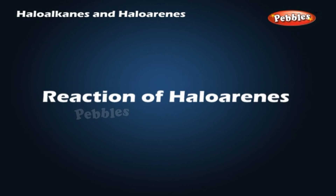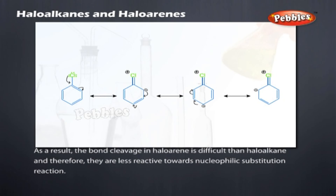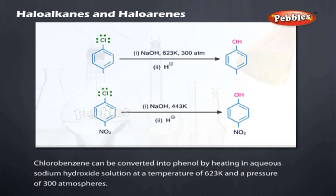Reactions of haloarenes — nucleophilic substitution, resonance effect: in haloarenes, the electron pairs on the halogen atom are in conjugation with the pi electrons of the ring, and several resonating structures are possible. The C–Cl bond acquires partial double-bond character due to resonance, making bond cleavage more difficult than in haloalkanes, so haloarenes are less reactive towards nucleophilic substitution. Chlorobenzene can be converted to phenol by heating in aqueous NaOH at 623 K and 300 atmospheres.